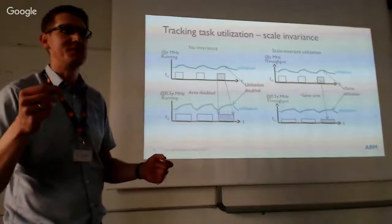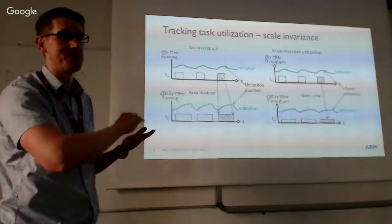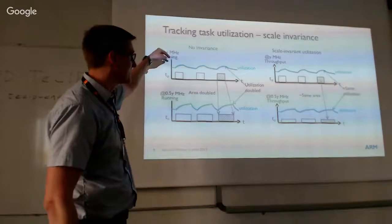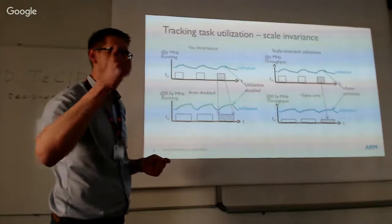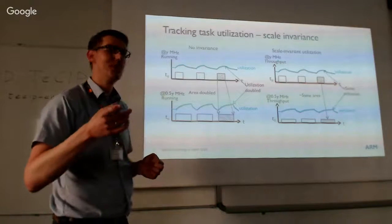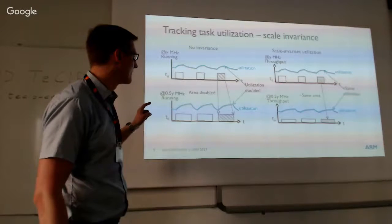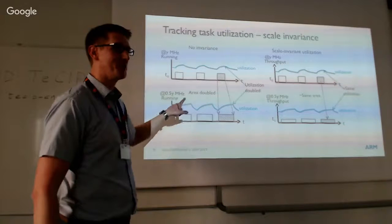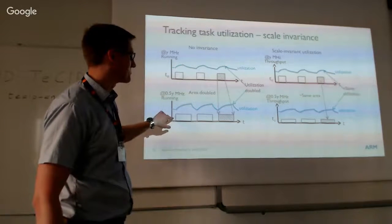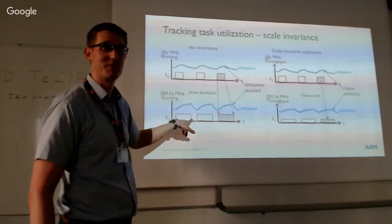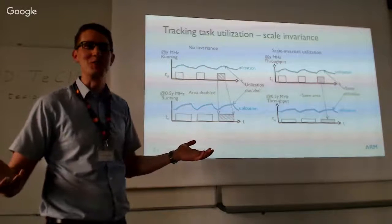What PELT does is track utilization by tracking running time through a geometric series — when you run, the value ramps up; when you sleep, it decays. But since it's time-based, whenever you change frequency your runtime changes. If you run the same task at half the frequency, it takes twice as long to complete each activation, giving you a higher apparent utilization — which is wrong, because a task shouldn't appear bigger just because you're running slower.